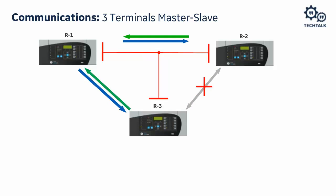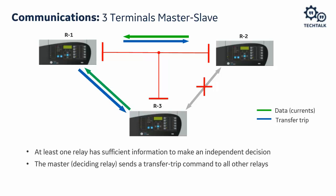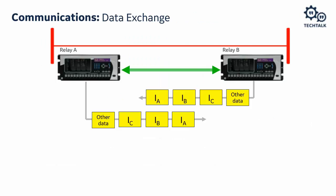In the three-terminal configuration, if one channel fails — say between relay three and relay two — those two relays still send data to relay one. Relay one still has all information needed to detect the fault, and the system reconfigures to master-slave mode. Relay one becomes master, makes the differential decision, and sends DTT to all other relays. The fault is cleared, so there is redundancy built in even in the three-terminal configuration.